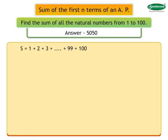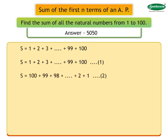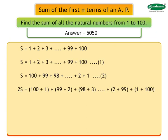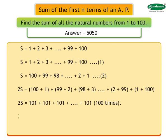The method he used was as follows. He added the numbers from 1 to 100. Similarly, he added the numbers from 100 to 1. Adding these two equations term-wise, he got 2S equal to (100+1) + (99+2) + (98+3) + ... + (2+99) + (1+100). This gives 2S equal to 101, one hundred times, so 2S equals 101 into 100. Therefore, S equals 5050.